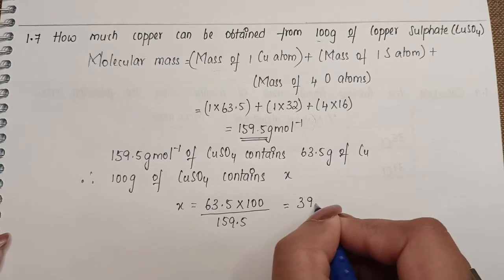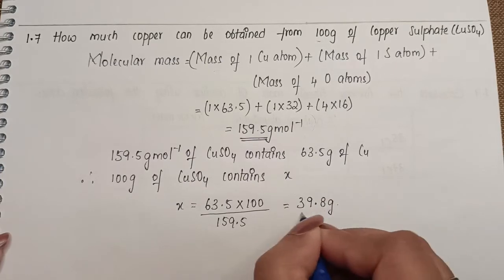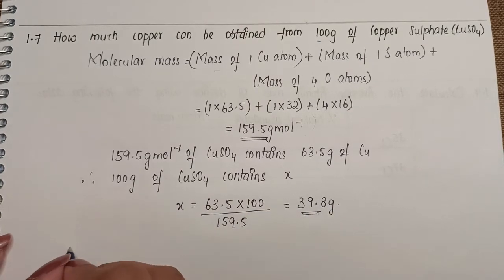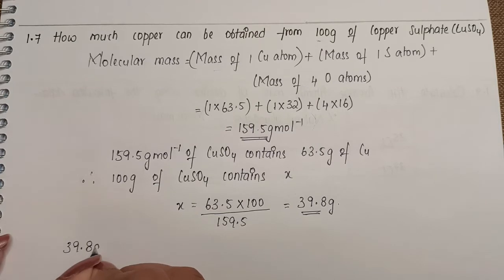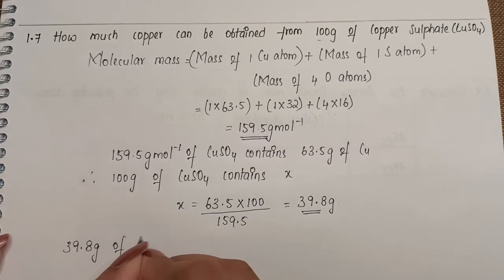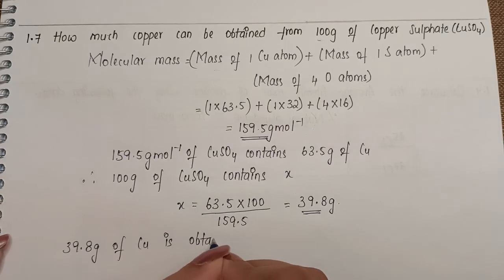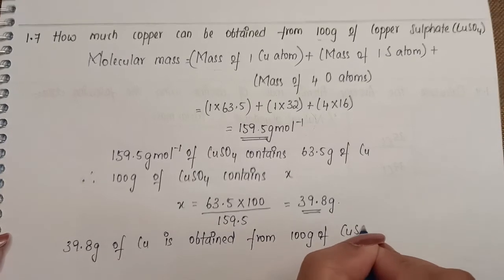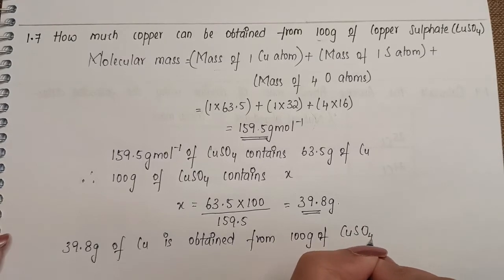So here we can tell that 39.8 grams of copper is obtained from 100 grams of copper sulfate.